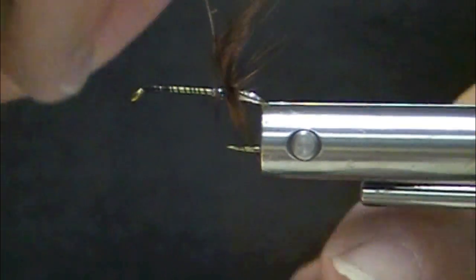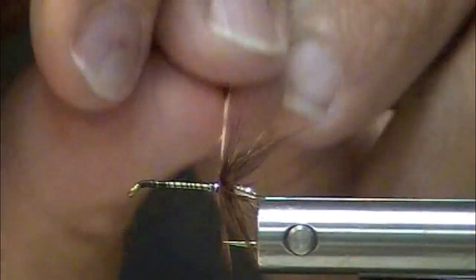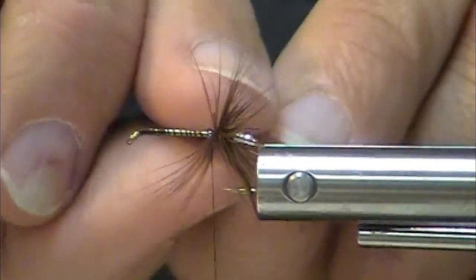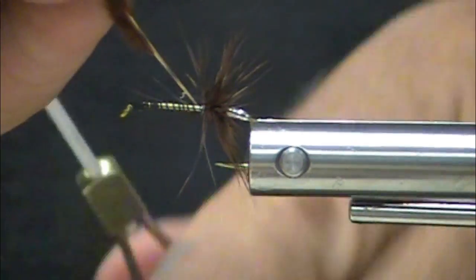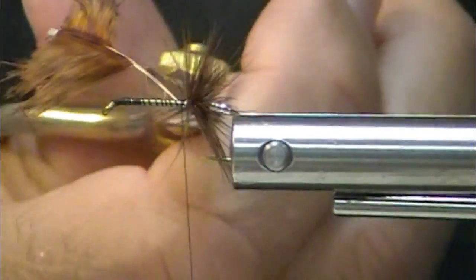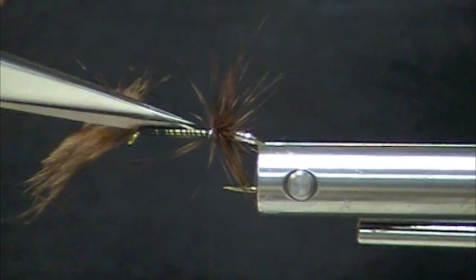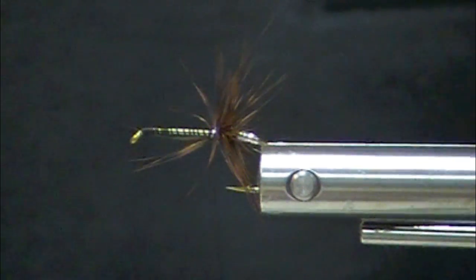These are really nice. You can tie these, and let's talk about hook sizes. Sea-run cutthroat. I hear it said that they will take flies in the size 4 to size 12 range, and that's accurate.